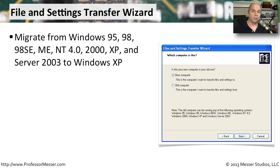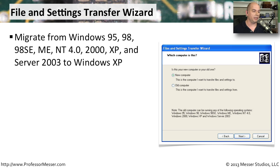Fortunately, there are utilities that will allow you to do this without having to remember where all the files were located or what configurations to set up. One of the very early migration tools in Windows was called the File and Settings Transfer Wizard, used when migrating to Windows XP. It supported migrations from Windows 95, 98, 98 SE, ME, NT 4.0, Windows 2000, previous editions of Windows XP, and Server 2003.